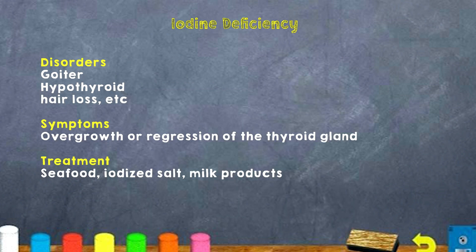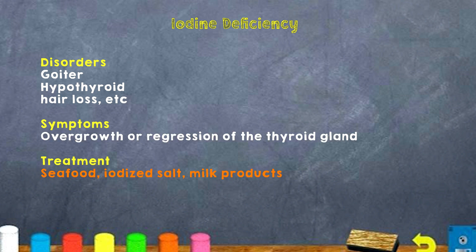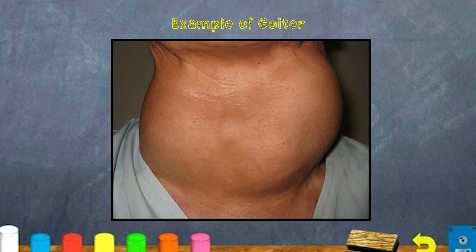The next deficiency is iodine deficiency, which can cause goiter, hypothyroidism, and hair loss. Symptoms include overgrowth or regression of the thyroid gland. Treatment includes eating seafood, salt, and milk products. Here you can see a picture of someone with goiter.